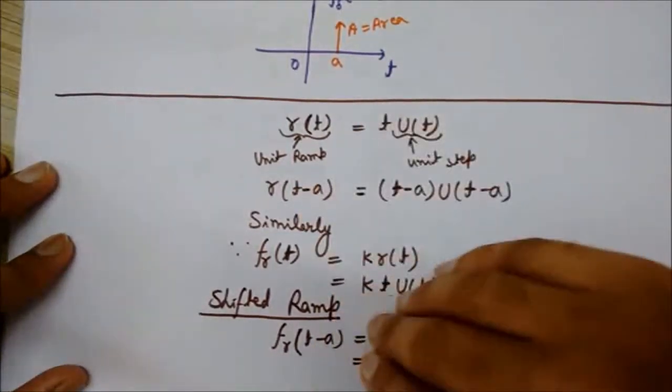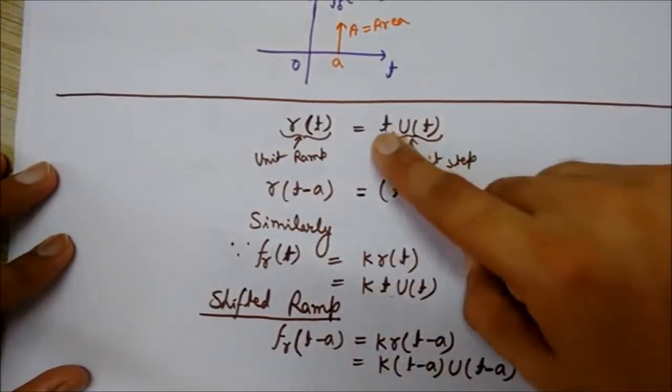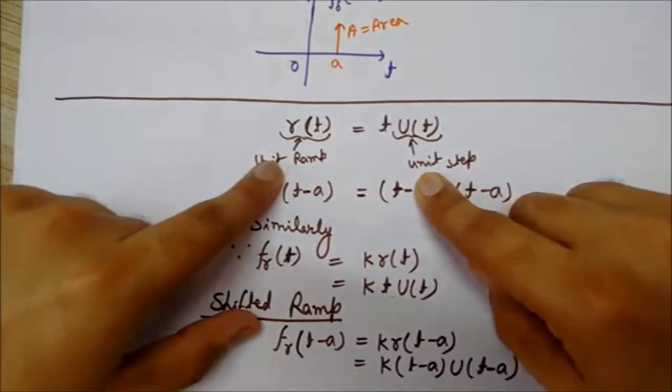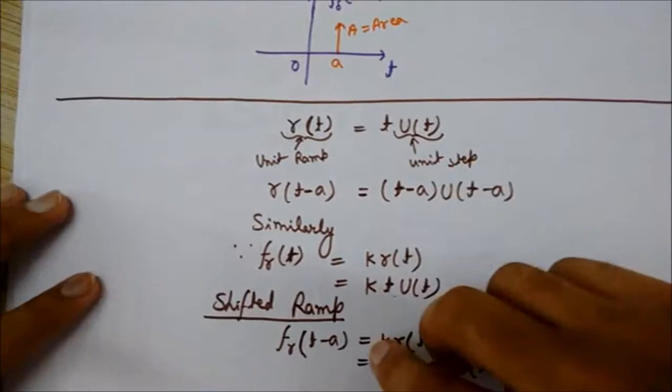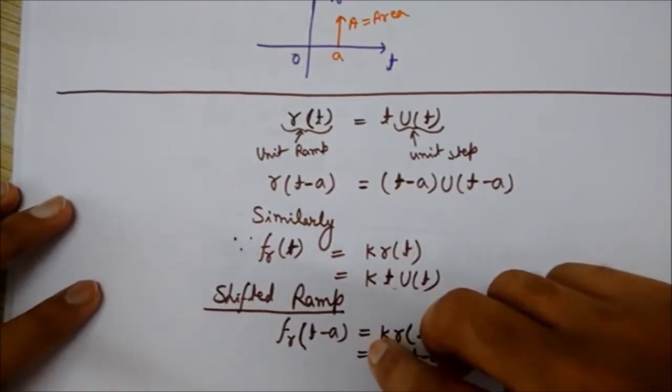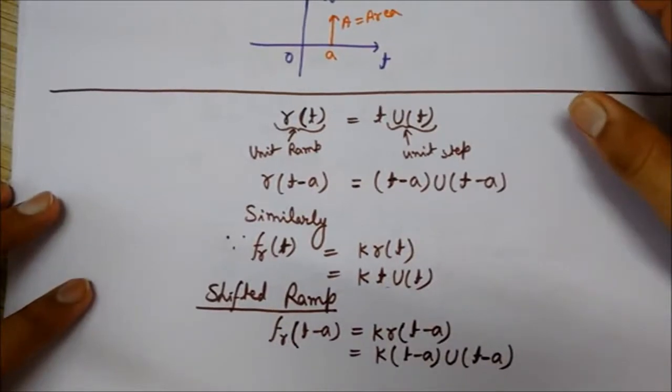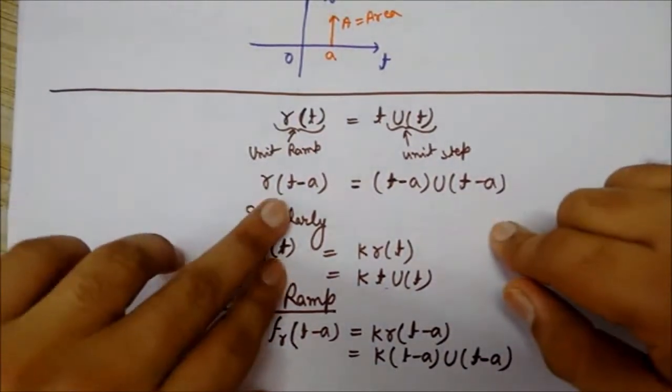The ramp signal can be written as t*u(t) - it is the unit ramp and the unit step. In the same way, for the shifted case when we shift by a, you can write r(t-a) equals (t-a)*u(t-a).